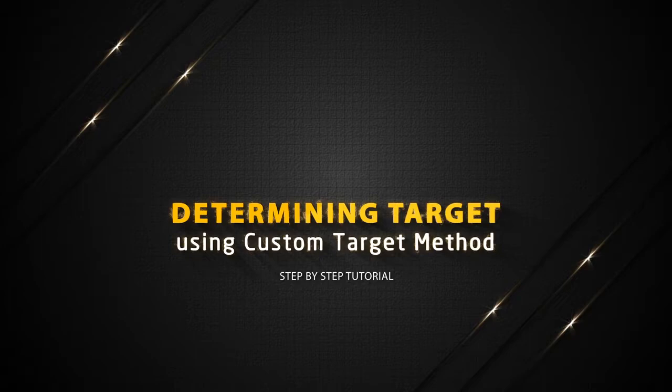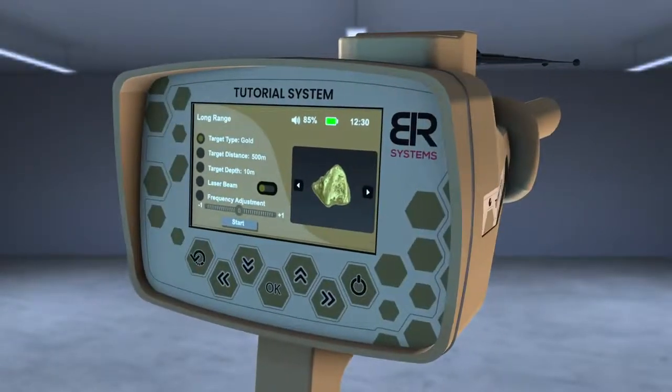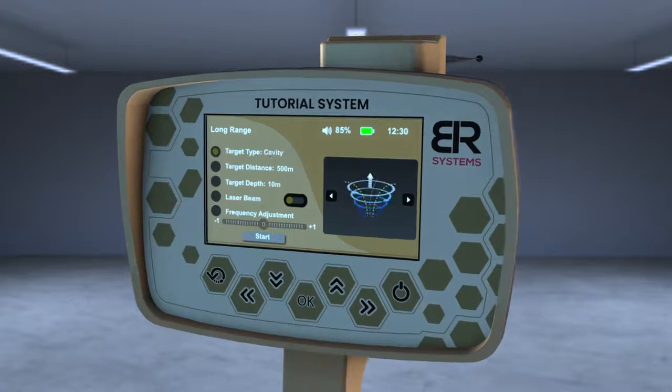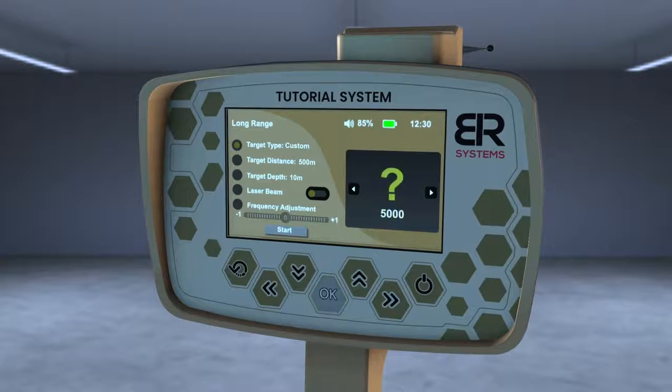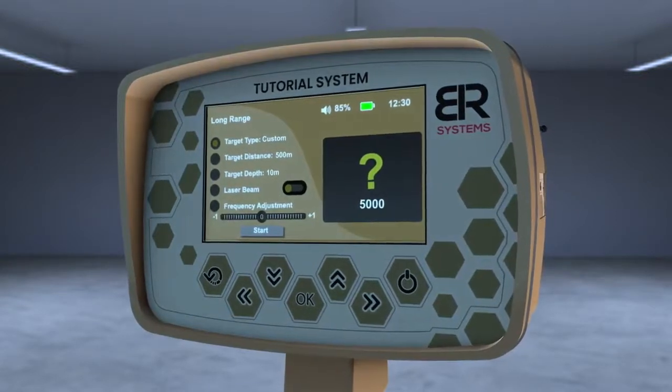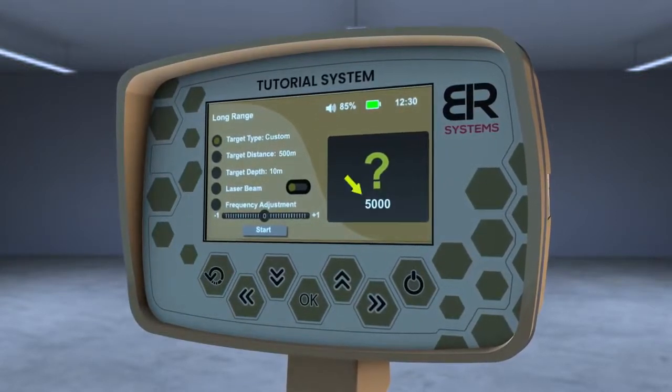Determining target using custom target method. From the list of targets, choose the custom target and then press the OK key to have the opportunity to modify the frequency of the desired metal.